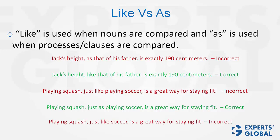One more example: playing squash just like soccer is a great way for staying fit. This sentence is not correct — and it's not a matter of like or as. Playing squash, an action, is being compared with soccer, a noun, and therefore the comparison itself is not correct, whether you use like or as — both are going to be incorrect. The only way this sentence can be corrected is by either comparing playing squash with playing soccer, or comparing squash with soccer.